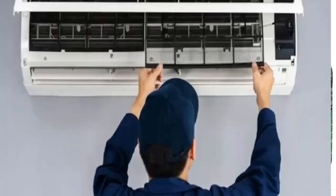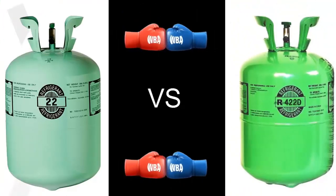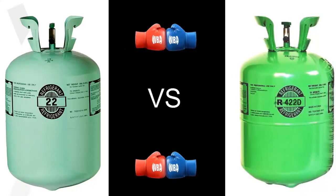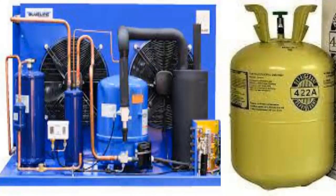Within the R422 family, the most recommended gas to replace R22 in air conditioning systems is R422D. Additionally, in lower temperature applications, the R422A refrigerant is widely used as a substitute for R22.